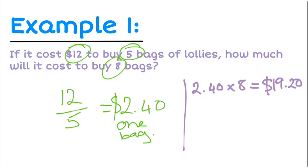That's proportional reasoning. We work out the cost for one unit, then convert that into the number of units we want.